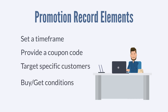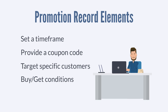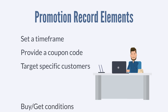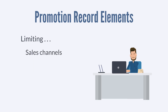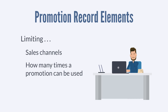You can also set the buy and get conditions — in other words, what a customer would need to buy in order to be eligible for the promotion, and the deal the customer would get as a result. A couple other elements you can determine are limiting the promotion to specific sales channels or limiting the number of times one customer can use the same promotion.